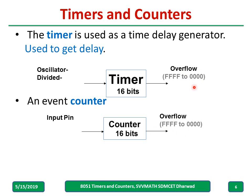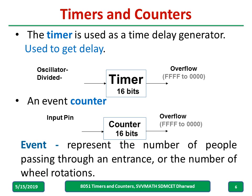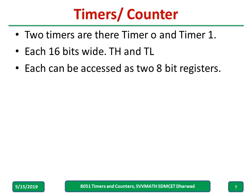Since it is a 16-bit timer, the range is always from 0000 to FFFF. An event represents the number of people passing through an entrance or the number of wheel rotations. Two timers are present in the 8051: Timer 0 and Timer 1. Each is 16-bit wide, divided into a higher byte TH and a lower byte TL, giving a total of 16 bits, and each can be accessed as two separate 8-bit registers.